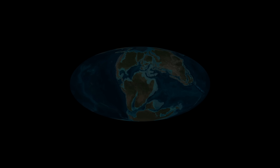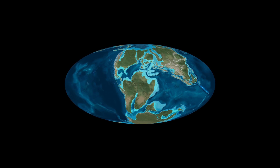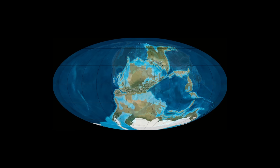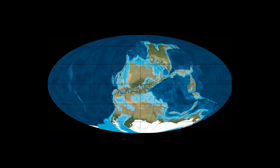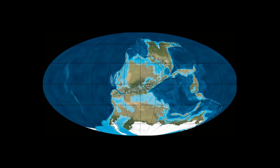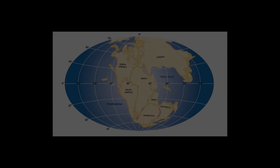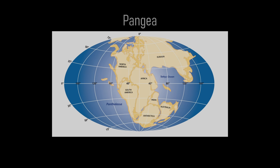Around 359 million years ago, Earth looks nothing like it does today. The continents are doing that thing they do, drifting around, bumping into each other. And right now they're clustering near the equator, slowly emerging into what will eventually become the supercontinent Pangea.